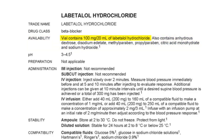In this example, it contains 100 mg of labetalol hydrochloride per 20 ml vial. It also contains other ingredients: anhydrous dextrose, disodium edetate, methylparaben, propylparaben, citric acid monohydrate, and sodium hydroxide. All these extra ingredients help keep the medicine stable. The book doesn't list water as an ingredient. Electrolyte monographs are also listed with the amount of electrolytes in millimoles and milliequivalents per ml.